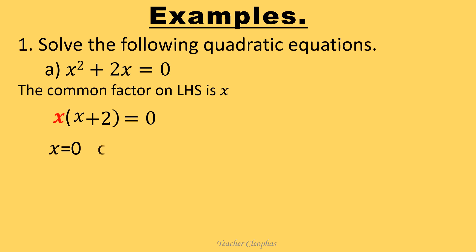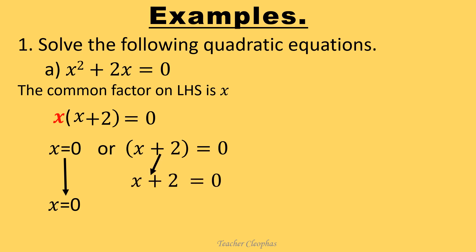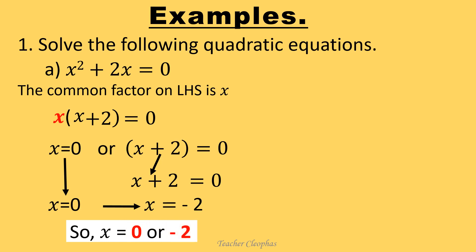So in this case we have x equals to zero or x plus 2 being equal to zero. We can write x equals to zero as our first answer, then we proceed to x plus 2 equals to zero. If we subtract 2 on both sides, then we will have x equals to negative 2. We can therefore clearly see that x is either equal to zero or negative 2, so our answer is x equals to zero or negative 2.